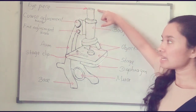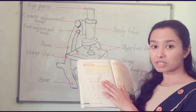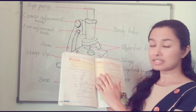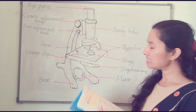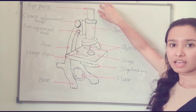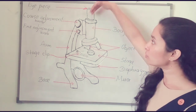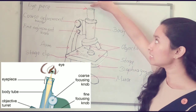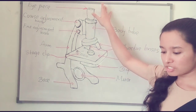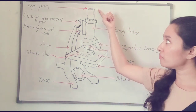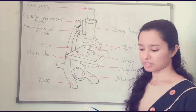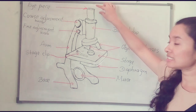Let's identify the parts. The first one is the eyepiece. This is the closest lens to the eye — it is a convex lens. Because we observe the specimen through this eyepiece, we put our eye near to it. We can use different types of convex lenses here, and the magnification will be 5 times, 10 times, or 15 times.